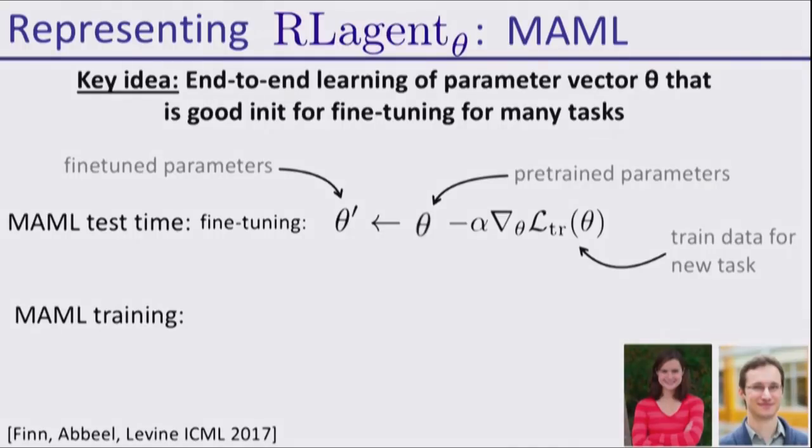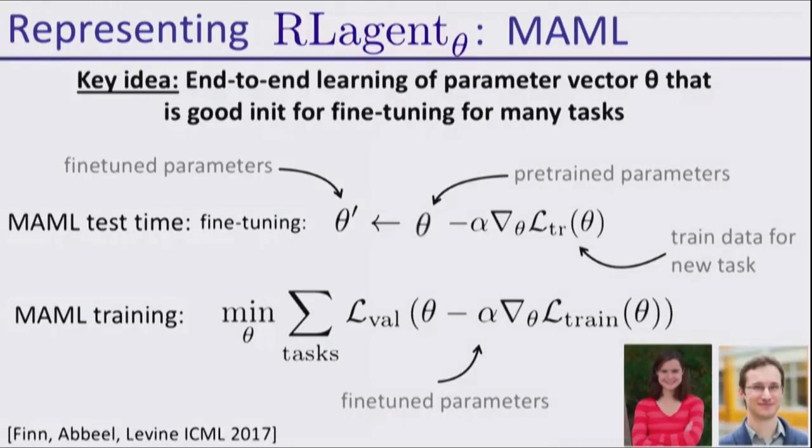How do you train for this? You can train this end-to-end. At meta-training time, you set up a set of tasks. You try to find a parameter vector theta that is such that if you sample a task and take a gradient step on the training data from that task, you do well on the validation data of that task with just one gradient step. If you find such a theta, that's a really good pre-trained parameter vector that you can use to solve many tasks in the future.